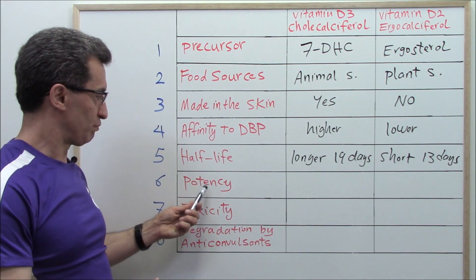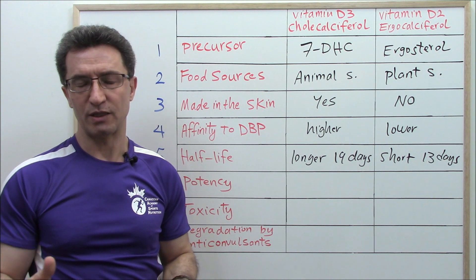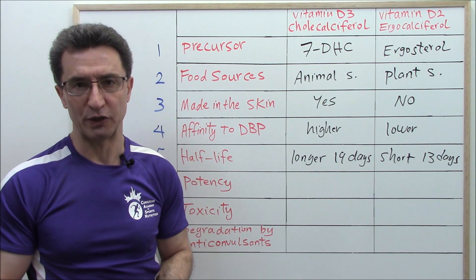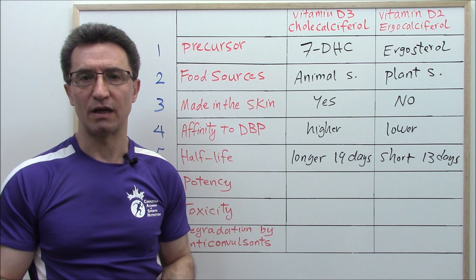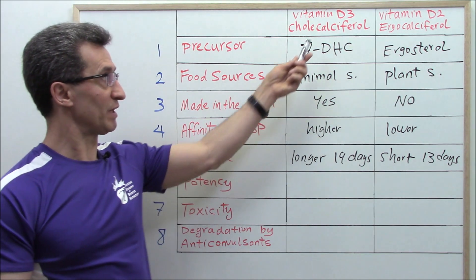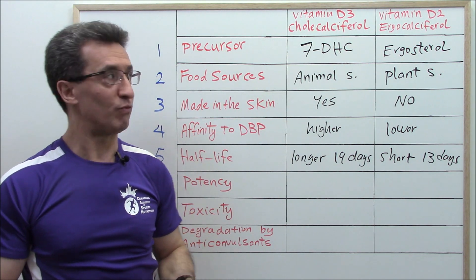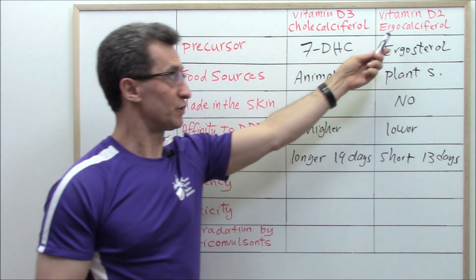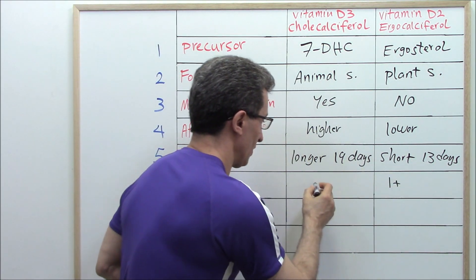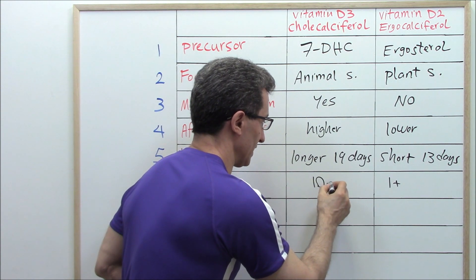Number six: potency. Potency means the ability to maintain blood levels of vitamin D higher for a longer period. According to medical textbooks, the potency of vitamin D3 is 10 times greater than that of vitamin D2. So if vitamin D2 is 1 plus, vitamin D3 is definitely 10 plus.